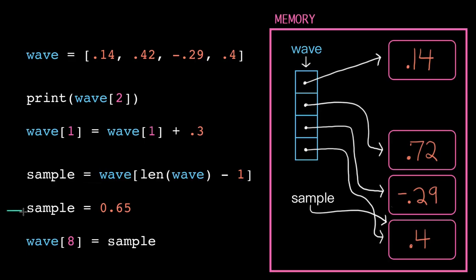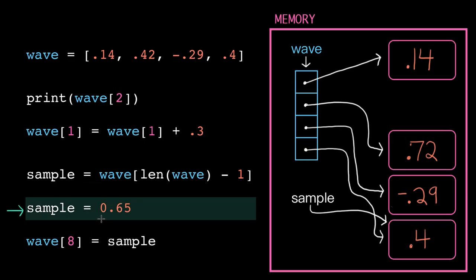Okay, now what do you think happens here? It's just a standard variable assignment. So we allocate a new chunk of memory, store the float 0.65, and then move the variable sample to point to this location. Important point, notice that this does not affect the list wave. At index 3, our little directory up here still points to the value 0.4. We only moved the pointer for sample.